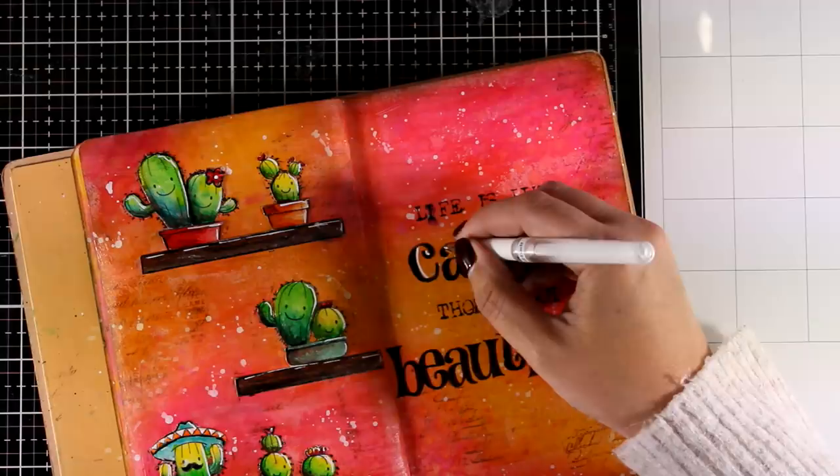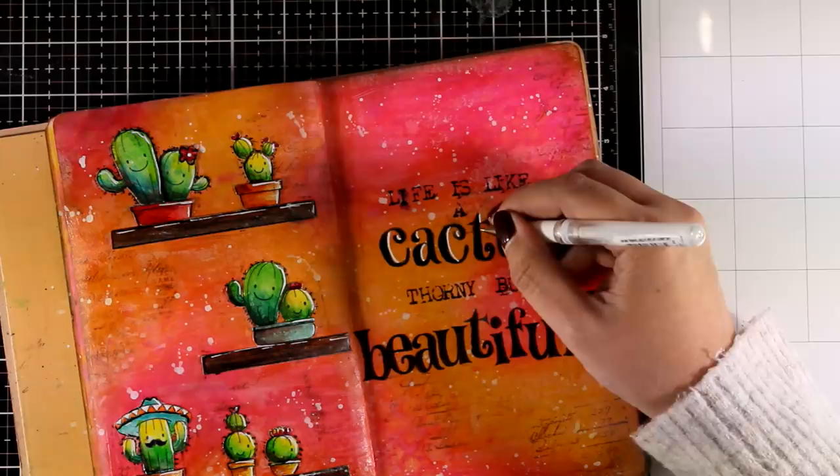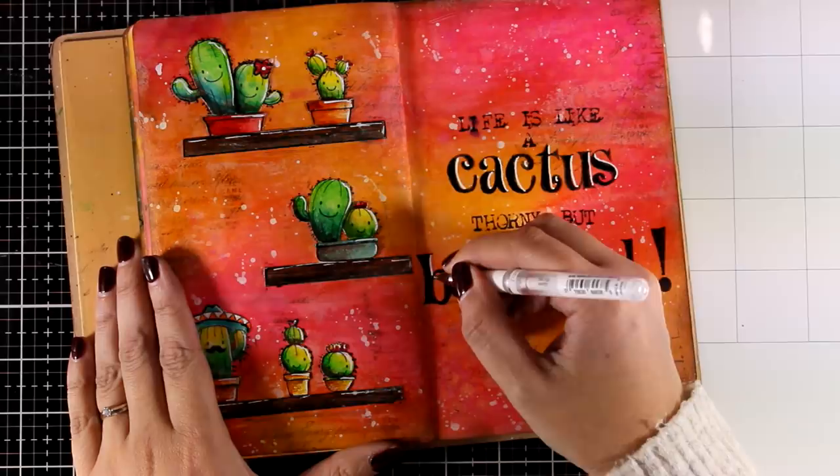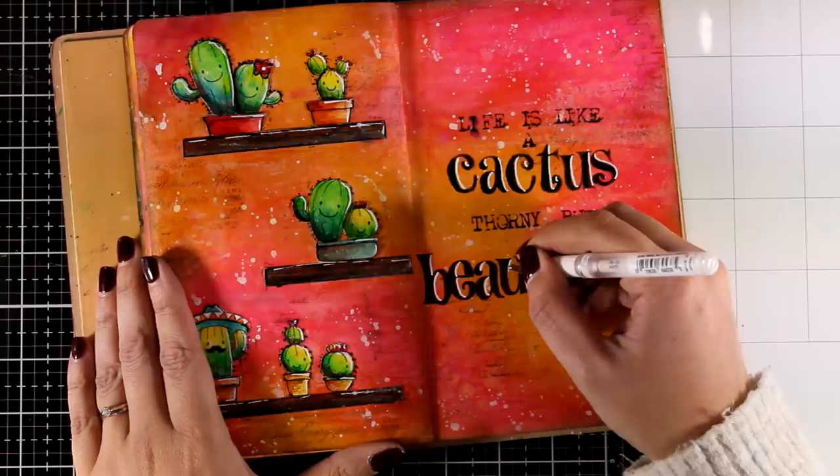Back to my white gel pen. And this time I am adding some highlights around the bigger letters. And I always like to add motivational quotes on my art journal. So this one is 'Life is like a cactus, thorny but beautiful.' So I'm going to add those highlights on the right side of the bigger letters, which helps those pop even more.